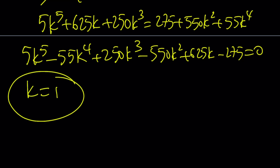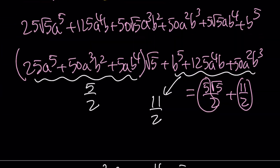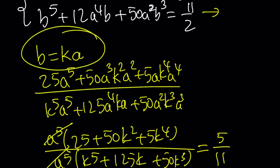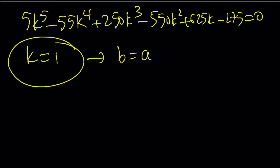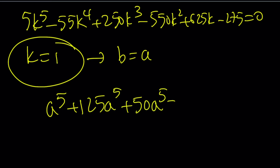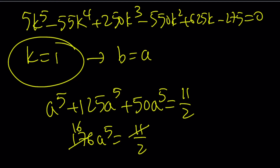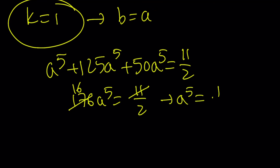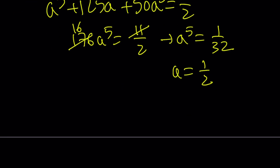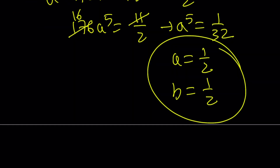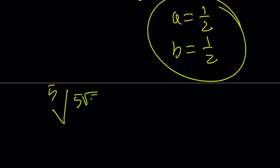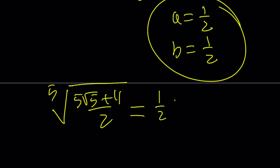Since k = 1, and our assumption was b = ka, that means b = a. If we plug b = a into our equation, we get a⁵ + 125a⁵ + 50a⁵ = 11/2, which gives 176a⁵ = 11/2. Since 176 = 16 × 11, this simplifies to a⁵ = 1/32, so a = 1/2. Since a = b, we also get b = 1/2.